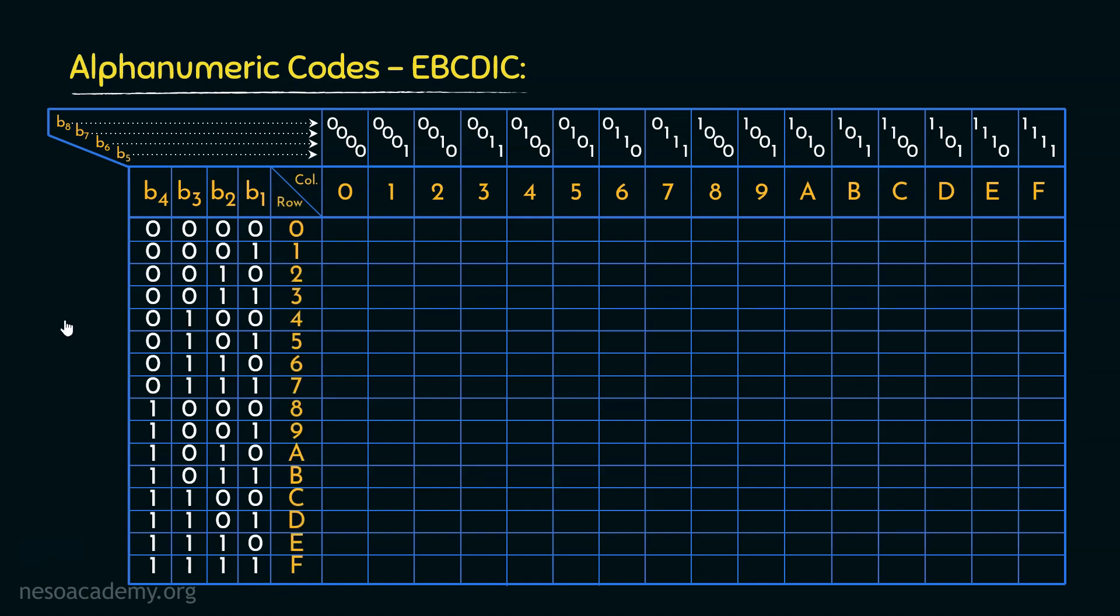If you remember, during the study of octal and hexadecimal numbers, we observed that the bigger the base, the more we can represent with lesser number of digits. Specifically for that reason, here we are using hexadecimal symbols to represent the columns and the rows. Let's now observe how the chart is filled.